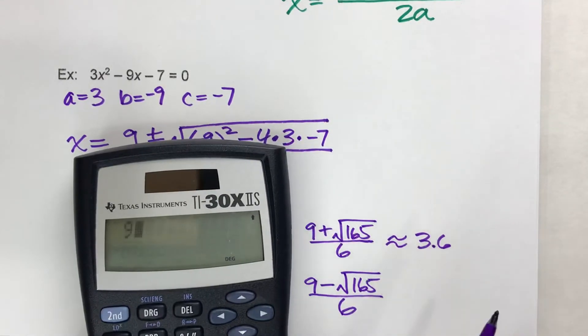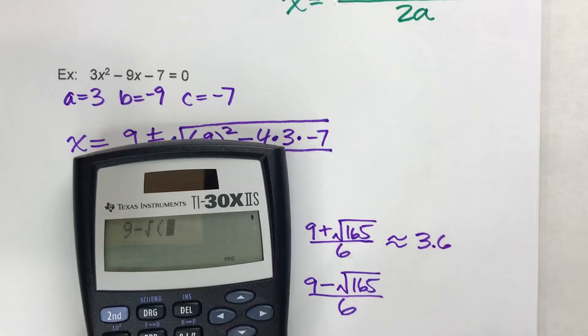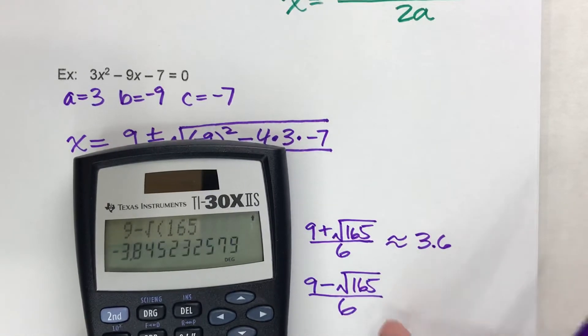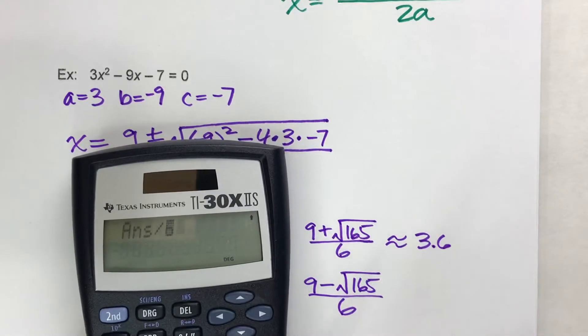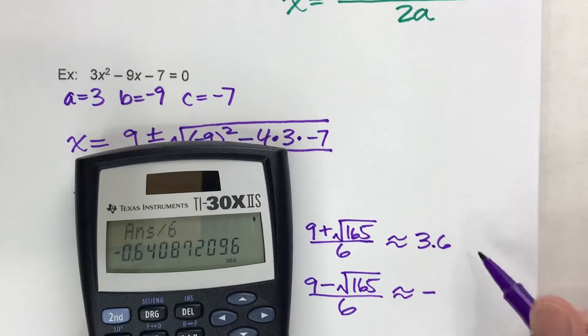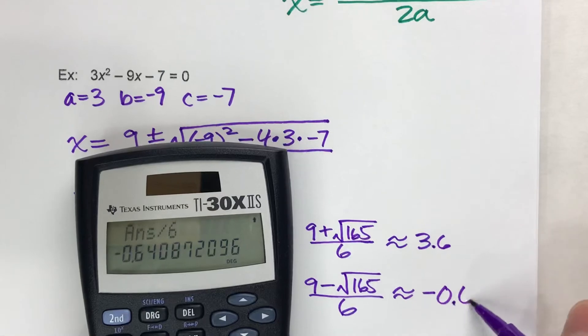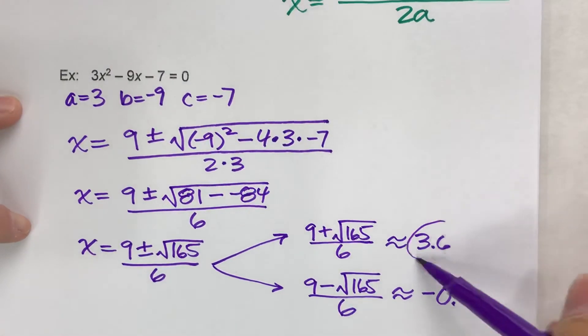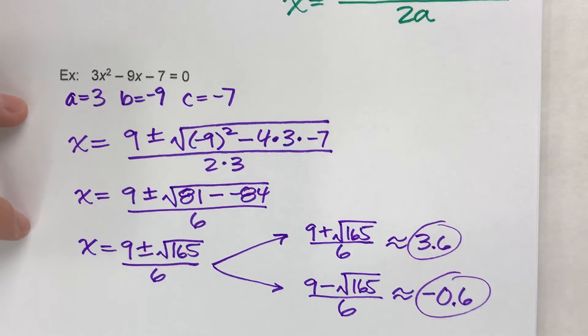And then for the other one, I've got 9 minus the square root of 165. And then I divide that whole thing by 6. I get about negative 0.6. And those are your two possible values of x that solve the equation.